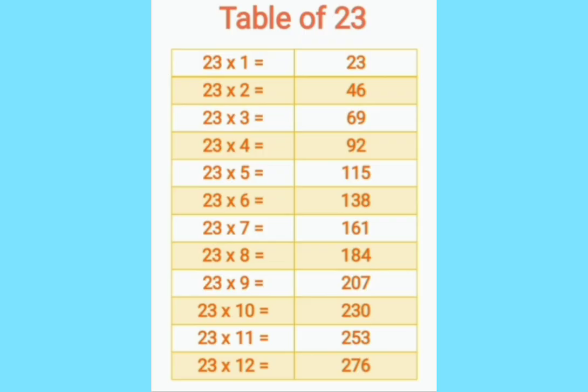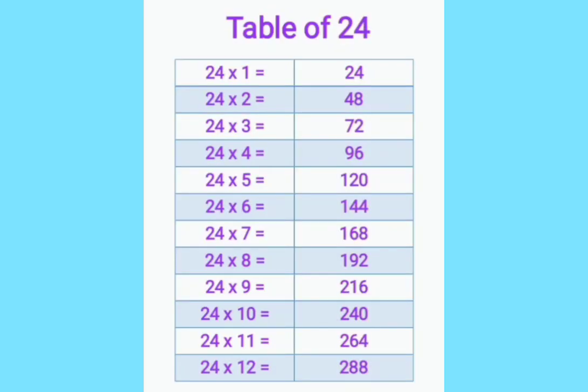24 ones are 24. 24 twos are 48. 24 threes are 72. 24 fours are 96. 24 fives are 120. 24 sixes are 144. 24 sevens are 168. 24 eights are 192. 24 nines are 216. 24 tens are 240. 24 elevens are 264. 24 twelves are 288.